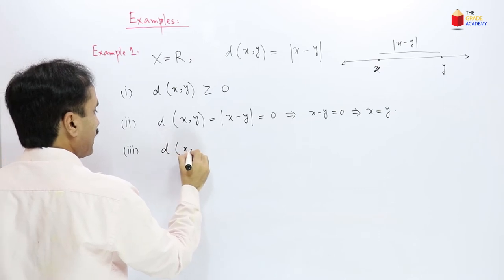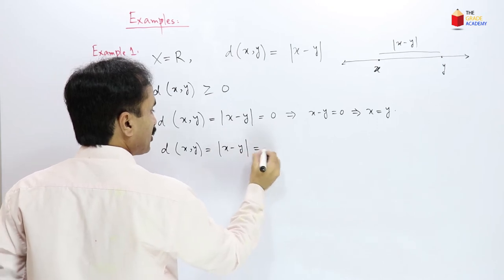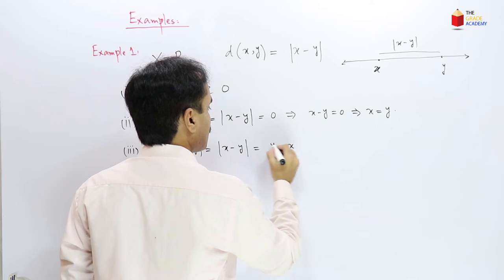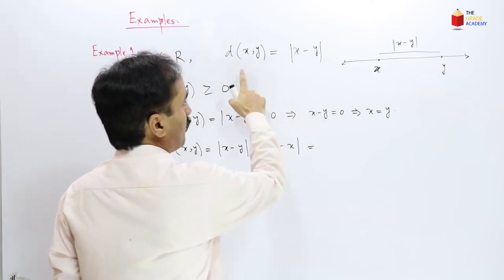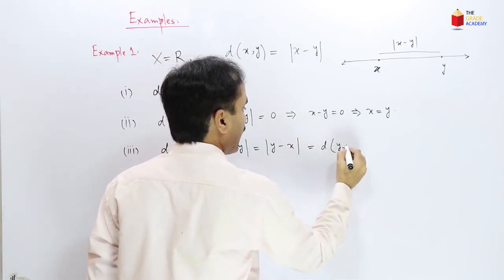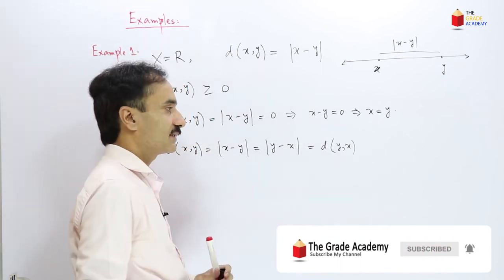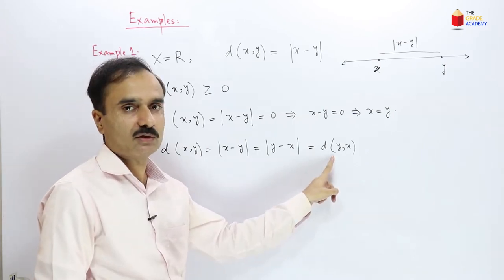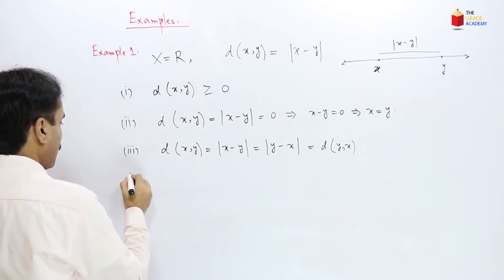And number 3: d(x,y) = |x − y|, which we can also write as |y − x|. By definition this is equal to d(y,x). So d(x,y) = d(y,x), and this axiom of a metric is also satisfied. Now number 4.